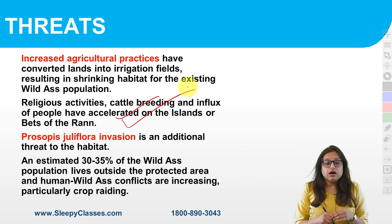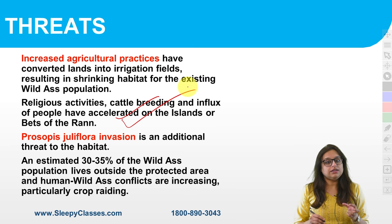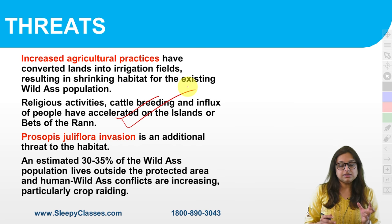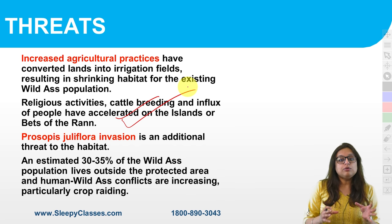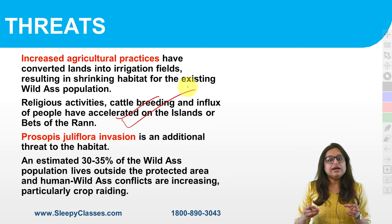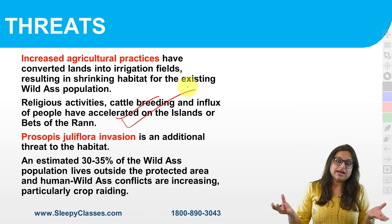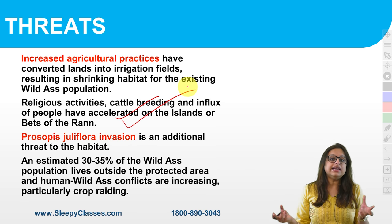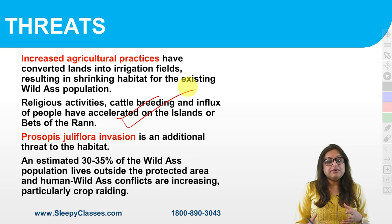Talking about Prosopis juliflora: there was a question in the 2018 CSP Civil Services Prelims Exam about it. It is an invasive plant — it spreads and is called the 'jungle kicker.' Because of this invasive species, the habitat has also been threatened.